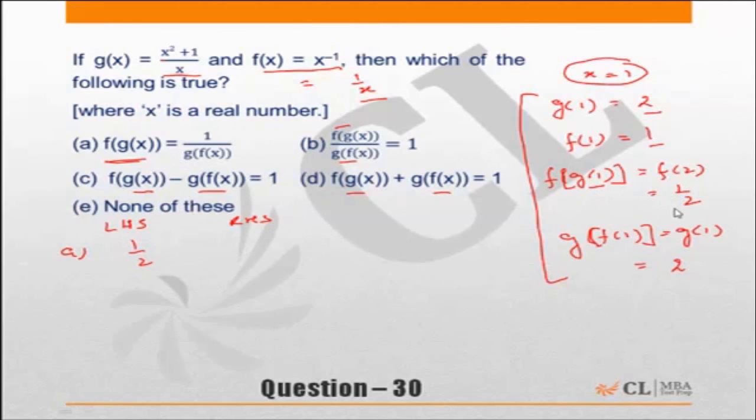f of g(1) is 1 by 2. What about right-hand side? 1 upon g of f(x), 1 upon g of f(x)—what is g of f(1)? 2. So 1 upon 2. So left-hand side and right-hand side are telling—that should be the answer. Let's just check out the other choices also just to prove the point.